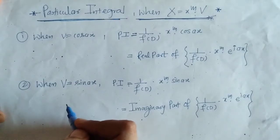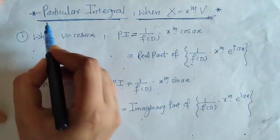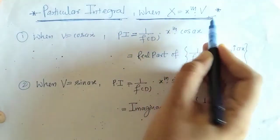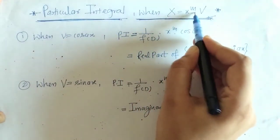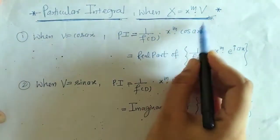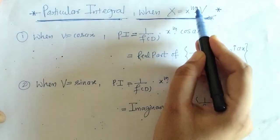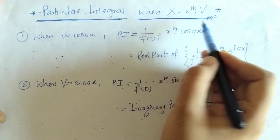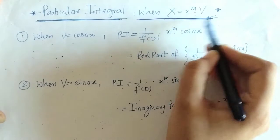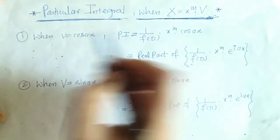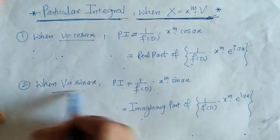Hello everyone, welcome to Unlock Maths. Today we are going to solve the particular integral when we have x equals x raised to m into v, where v is sin(ax) or cos(ax) and m is a positive integer. In the last lecture we have seen how to proceed for this type when v equals sin(ax) and cos(ax).